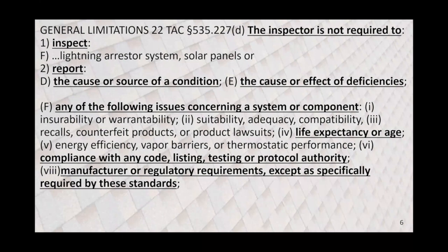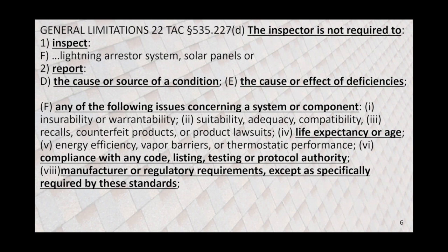Here are some general limitations. The inspector is not required to inspect lightning arrestor systems or solar panels. We're not required to report the cause or source of a condition. As we look at roofs, we don't have to say a life expectancy or age — I'm not saying you can't, just saying we don't have to. We don't have to talk about compliance with codes, listings, testing, or protocol authorities, or discuss manufacturer or regulatory requirements, except specifically required by these standards.